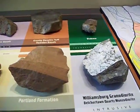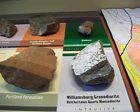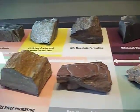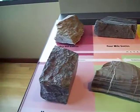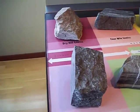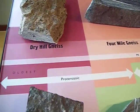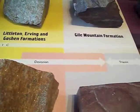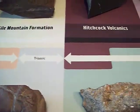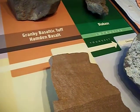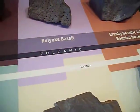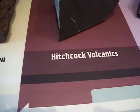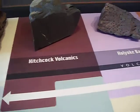Over here we have a key for this map. If you look at all of these rocks, notice that they have labels for the kind of formation they're on, and they also say what time period — what age they're from: the Ordovician, the Devonian, Triassic, and then a whole lot of stuff from the Jurassic. Each type will have a name, like the Hitchcock Volcanics.